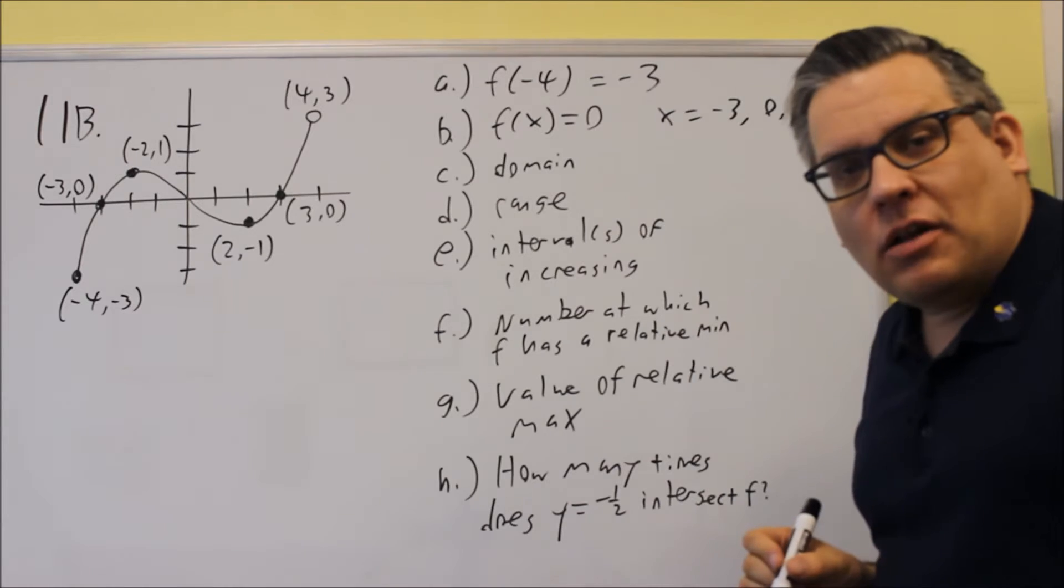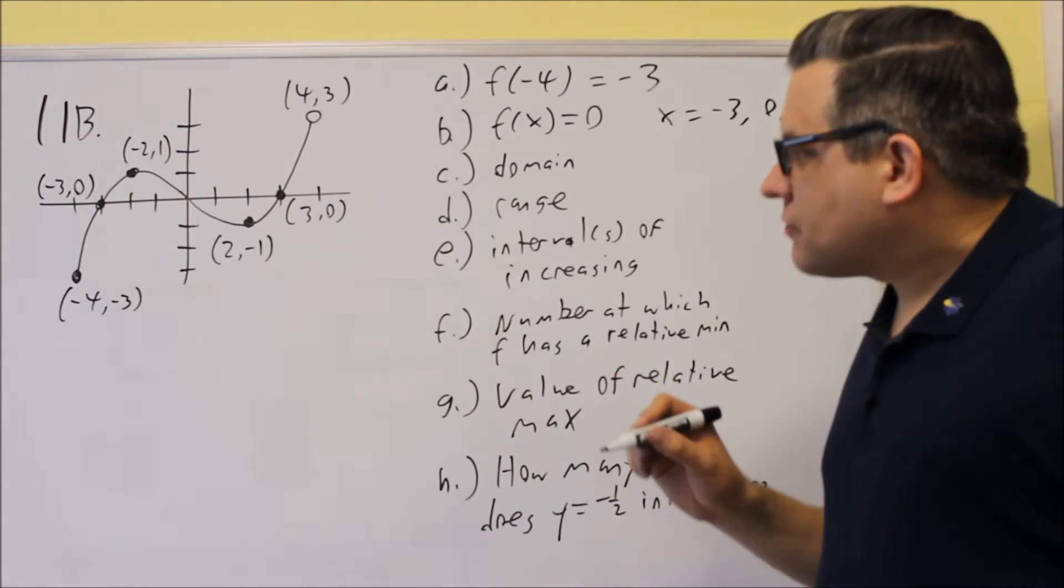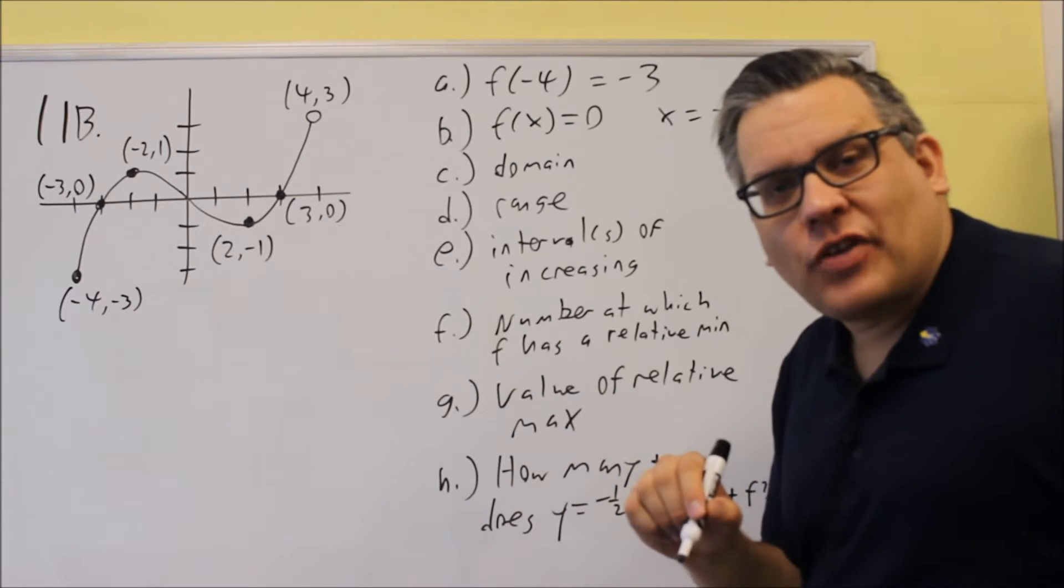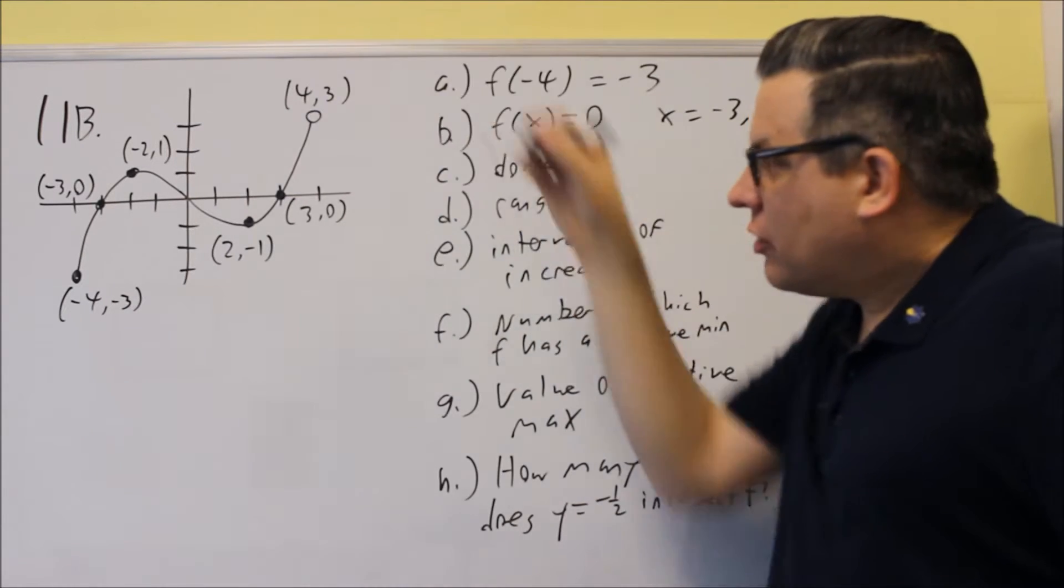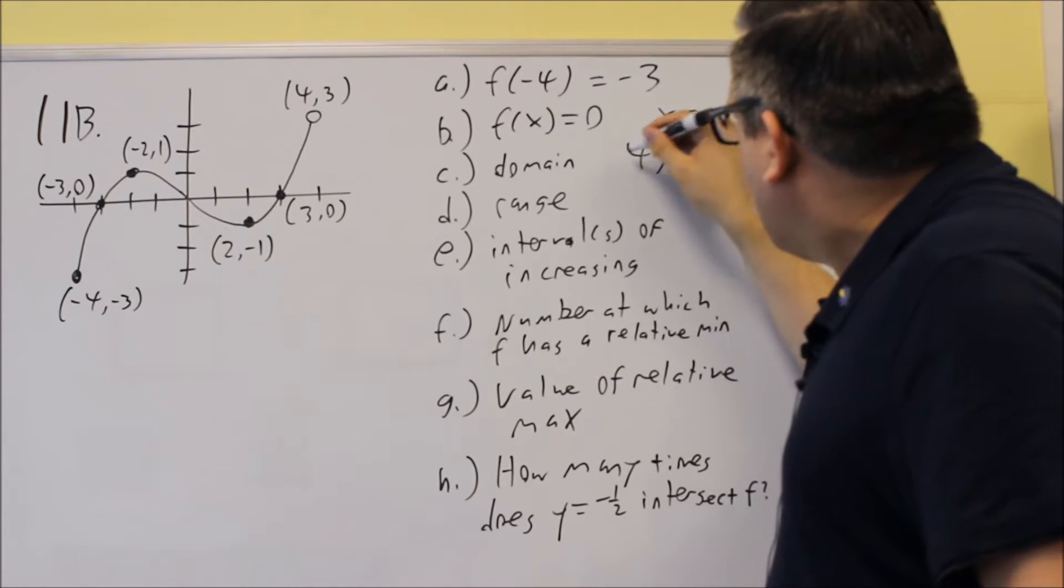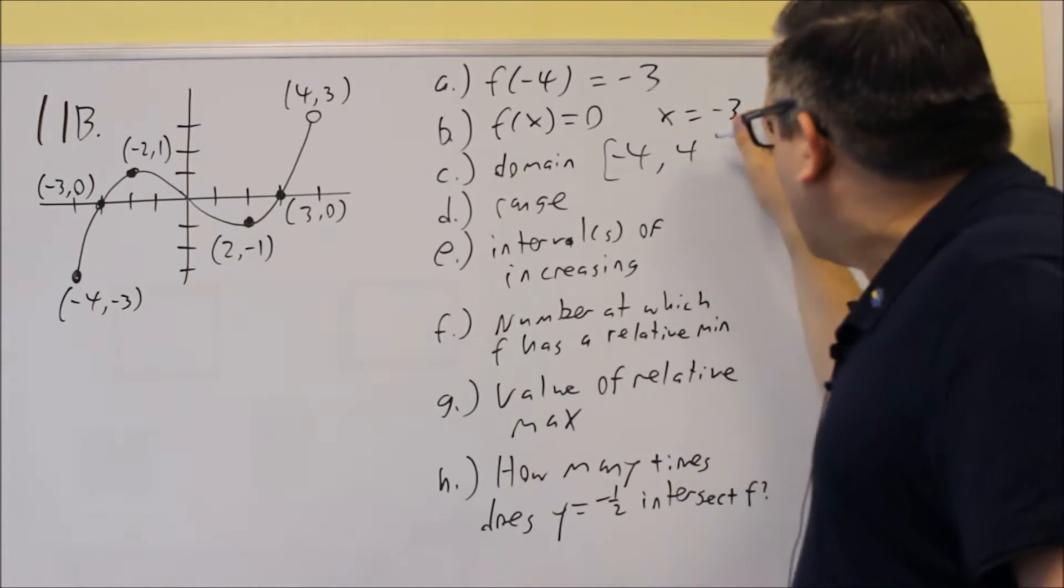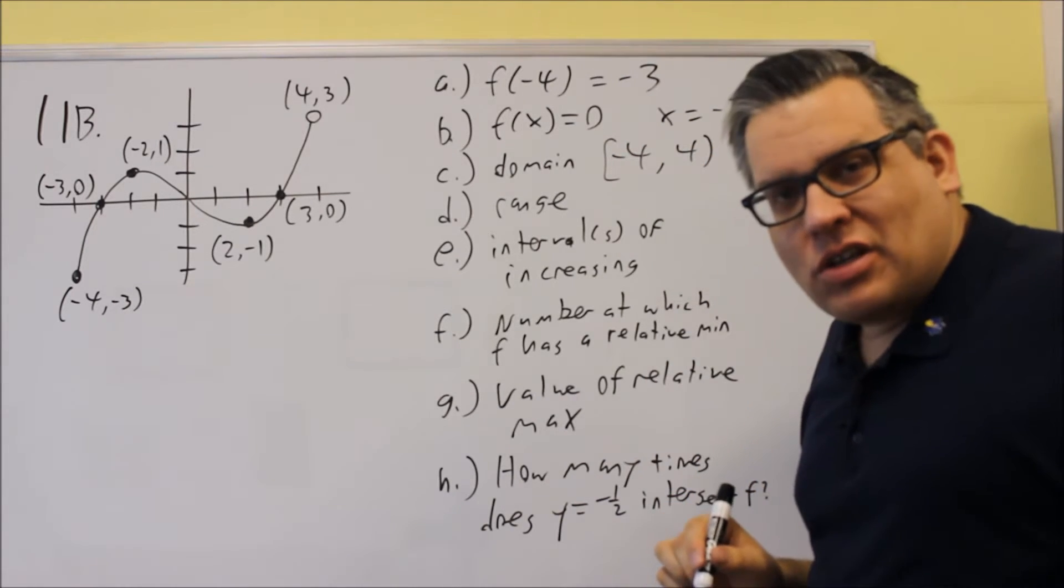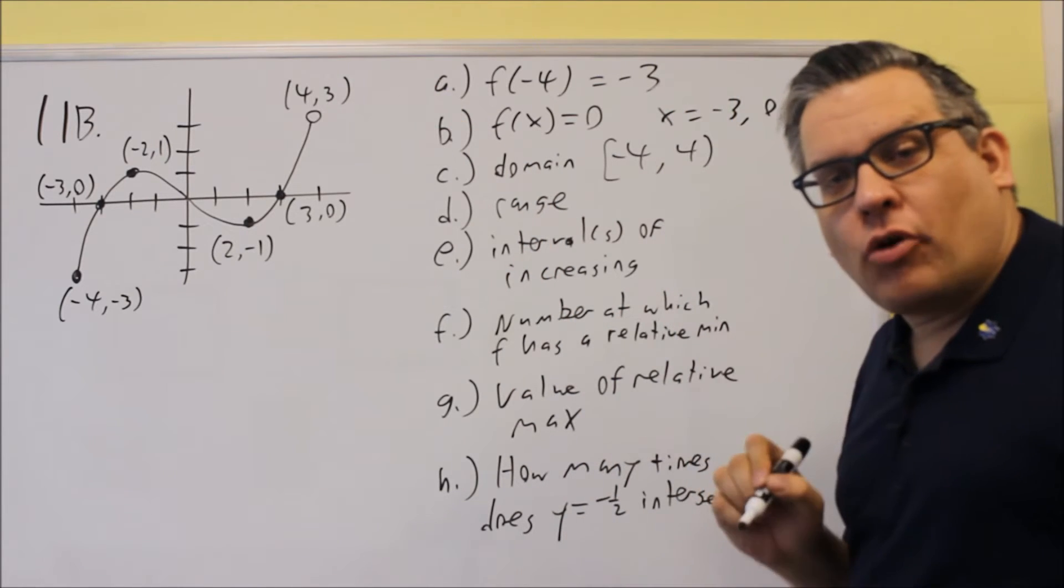Next, we want domain. Now, domain is from, we're using the smallest x value to the highest x value. Notice that on this one, the 4 would not be included. So when I write my answer, I'm going to put -4 to 4, but I'm going to put a bracket on -4, but I have to put a parenthesis on the 4 because that one's not included. Parenthesis means that the endpoint is not included.